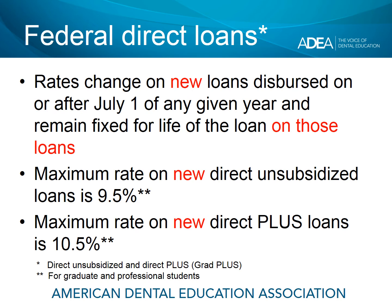Let's take a look at the interest rates on federal direct loans — the direct unsubsidized and direct plus, also known as grad plus. For many of you, these two loans will comprise the bulk, if not all, of your student loan portfolio. The rates change on new loans dispersed on or after July 1 of any given year, and then remain fixed for the life of those loans. This means if you go through four years of dental school and take out four direct unsubsidized loans, you could end up with four different loans with four different interest rates when you graduate, depending on when they were dispersed.